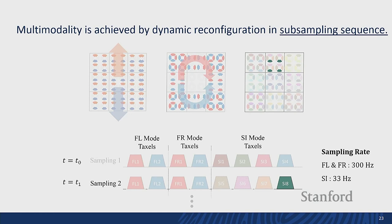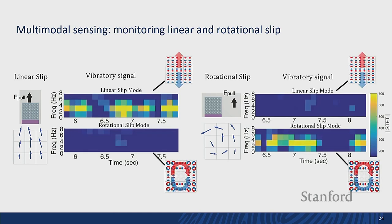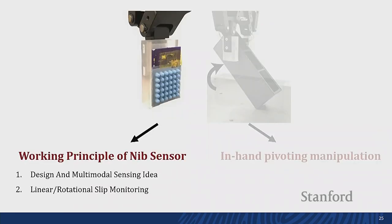Using this sensor, we tested differentiation between linear and rotational sliding. In the slow individual modes, the shear force field patterns are quite distinguishable. More importantly, the frequency response of each fast clustered mode shows that only the targeted slip mode is activated by each respective slip motion. So we can clearly differentiate linear and rotational slip.